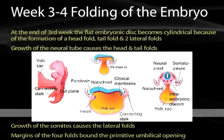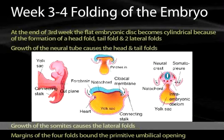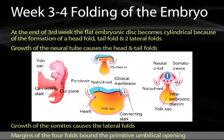From this area, the growth of the somites will be what causes the lateral folding. The prolific folding in the margins of all four of these folds will be the primitive umbilical opening that tethers the embryo back to the placenta.